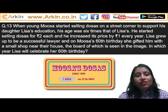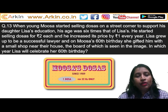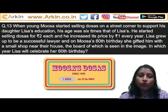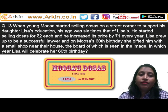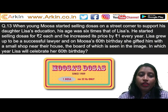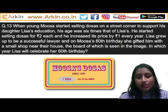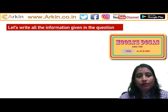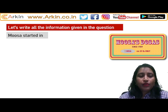Hi everyone. This is question number 13 from the UC paper 2021. The question is about Musa who is selling dosas and his daughter Lisa. The question asks when Lisa will celebrate her 60th birthday based on the information given. First, let's jot down all the information given in the question and on this board, then we will solve it.